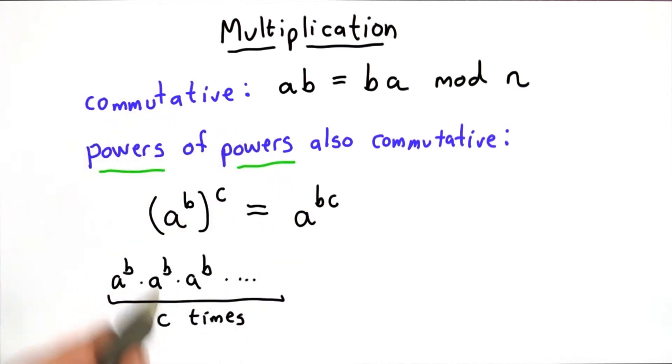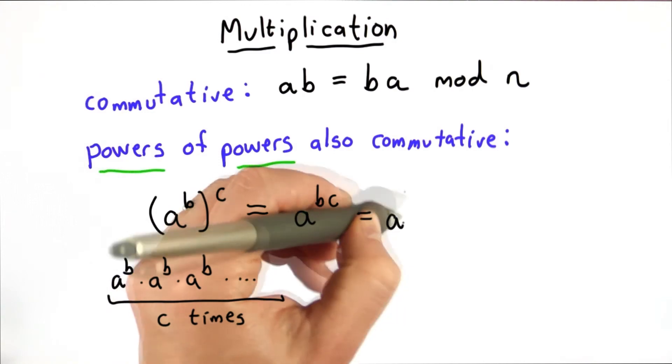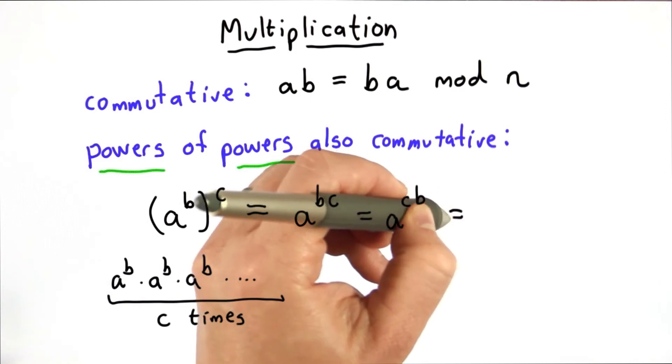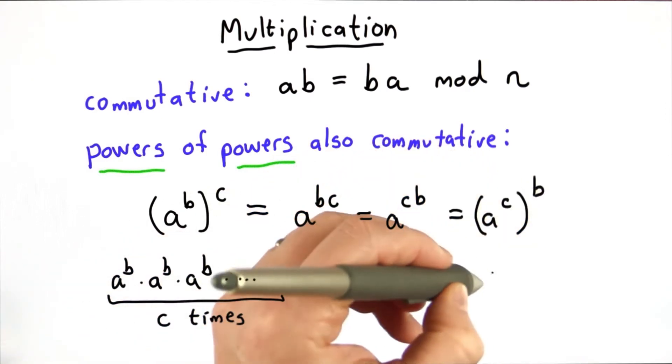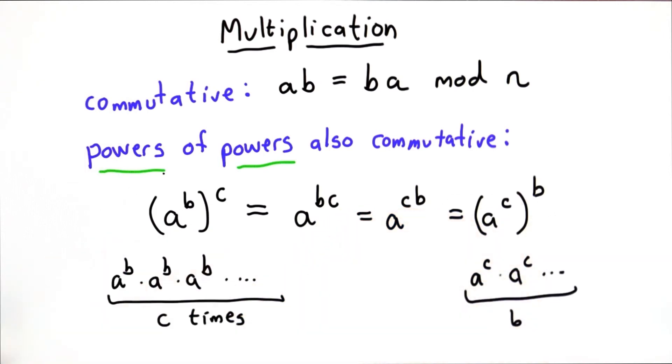We're just adding powers when we multiply here, which is also equivalent to a to the c times b. We know that from the commutative property of multiplication, which is also equivalent to a to the c to the b. Using the same property here, a to the c, a to the c, b times. These things are all equivalent.